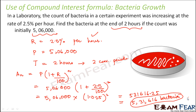Whenever you use the compound interest formula, remember one key thing: what is the time period for which you need to find the number, and how many conversion periods fall into that time period? When calculating conversion periods, take into consideration how the rate is given — whether per hour, per year, half-yearly, or quarterly. Once you have that, it is easy to calculate values using the compound interest formula.